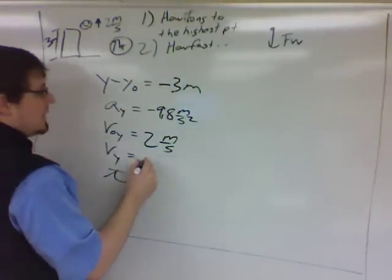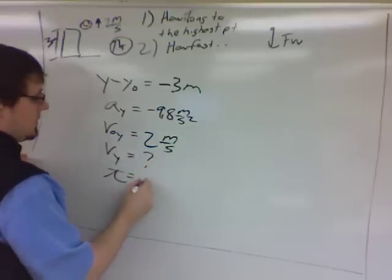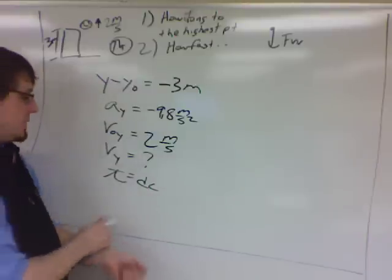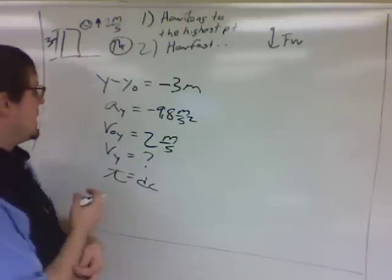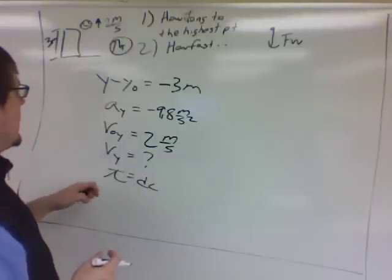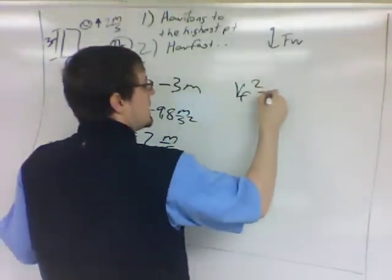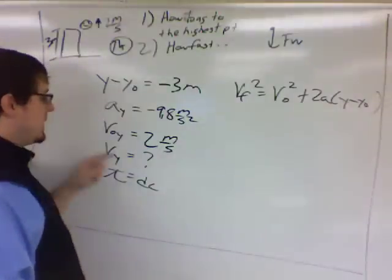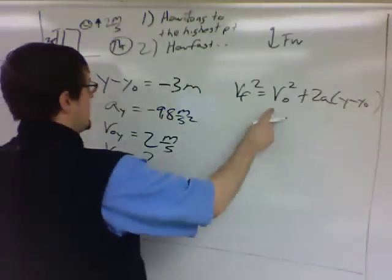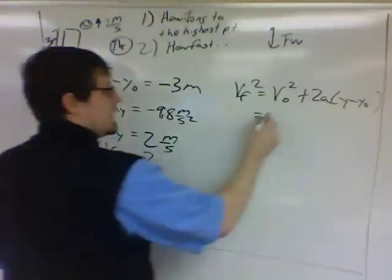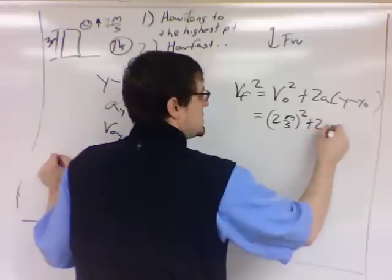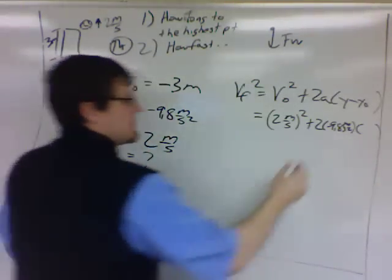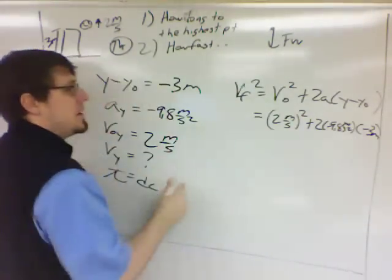Now we're ready to go ahead and solve for V final in the Y. And we don't know and don't care about time. So this will be the missing quantity in our equation. Because if we don't care about it, we don't want it to be in our equation. So in this case, it would be V final squared equals V naught squared plus 2A times Y minus Y naught. The V final is what we're looking for. V initial squared, that's going to be 2 meters per second squared plus 2 times negative 9.8 times a displacement of negative 3 meters. So I simply plugged and chugged from over here.